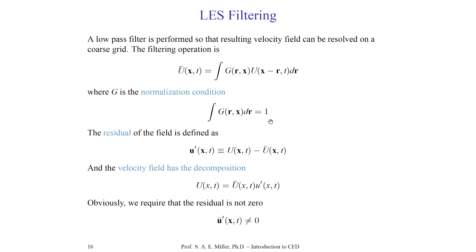G has the normalization condition that integrating G over dr gives a value of 1. The residual of the field is then defined as the fluctuating residual: u prime equals the actual unfiltered value u minus the filtered value u-bar. This is very much like the classic Reynolds decomposition, but u-bar here is the filtered velocity field, not a time average. The velocity field decomposes as u equals u-bar plus u-prime, and we require the residual to be non-zero.